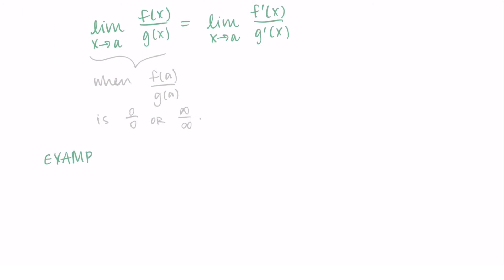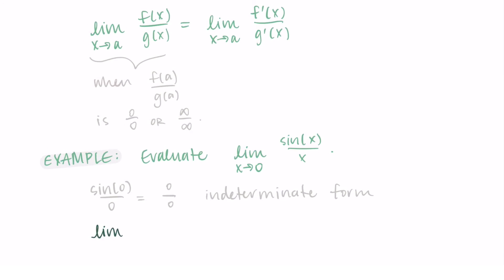Let's try this out on the example we saw earlier, where we were trying to evaluate the limit as x approaches 0 of sin(x)/x. We substituted in 0, we got 0 over 0. This is one of our indeterminate forms. So what we're going to do instead is rewrite the limit as the derivative of the numerator divided by the derivative of the denominator.